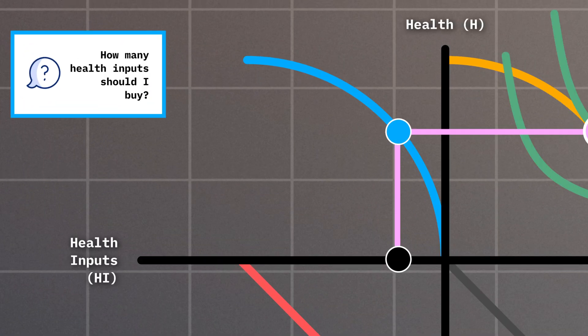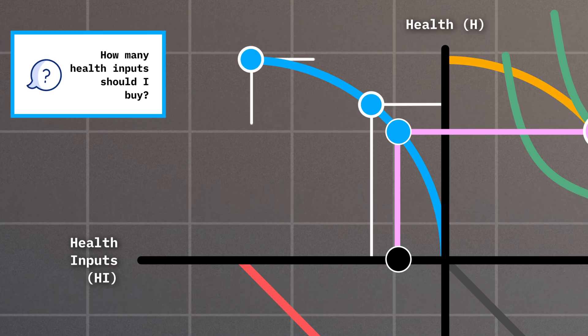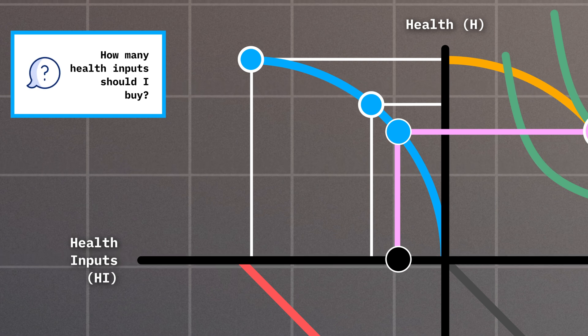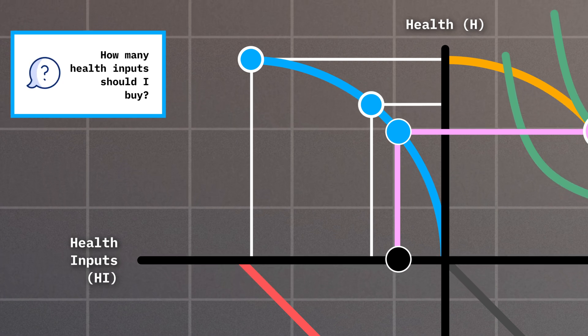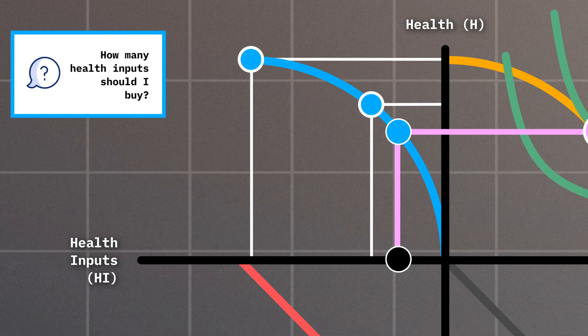You can see that the production function exhibits diminishing returns, whereby each additional unit of health input leads to a smaller increase in health. Think of buying health inputs as anything you may do to produce health, so for example paying for medical care or spending money on health-related goods or services.